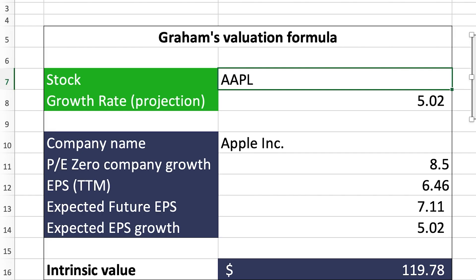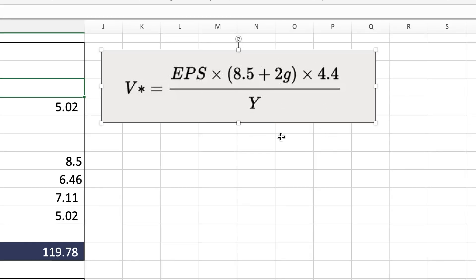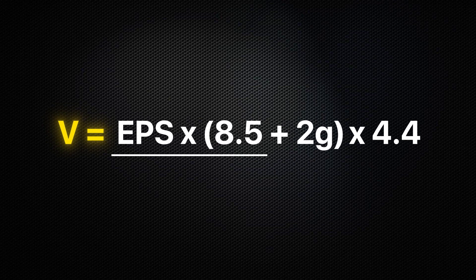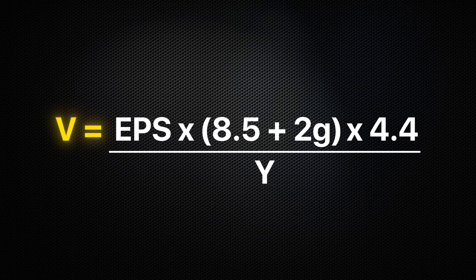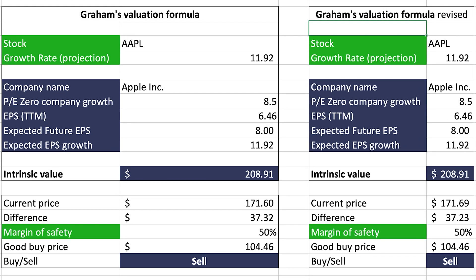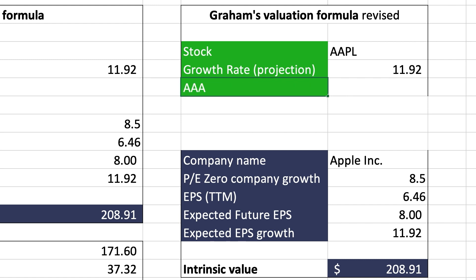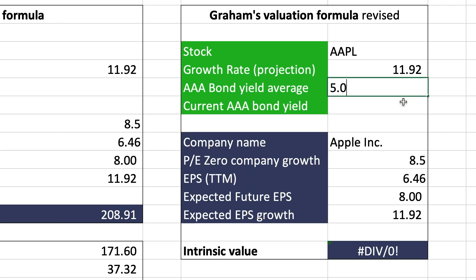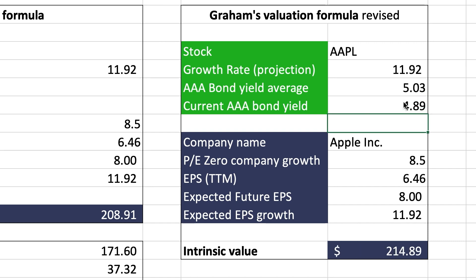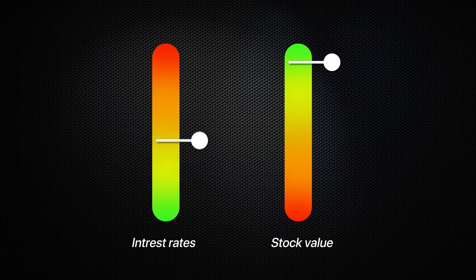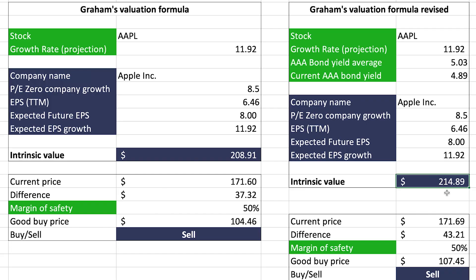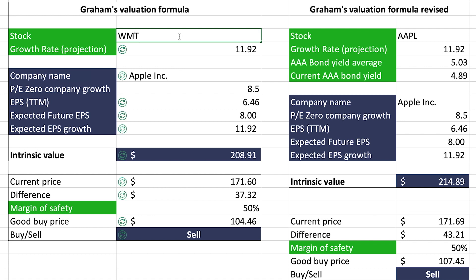If you want to be even more confident in the formula's results, you can use the updated version that Benjamin Graham developed after discovering that interest rates were one of the biggest contributors to stock prices. You copy-paste your formula and add the average yield of triple-A corporate bonds for the past 20 years and the current yield for those same bonds, because generally when interest rates rise, stock prices decrease, and when interest rates decrease, stock prices tend to go up.